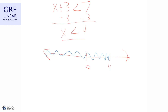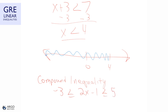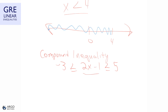We can also have solutions where x is between two numbers — these are called compound inequalities. They have three parts. For example: negative 3 is less than or equal to 2x minus 1 is less than or equal to 5. To solve, we perform operations on all three parts. Adding 1 to all three sides gives negative 2 is less than or equal to 2x is less than or equal to 6.